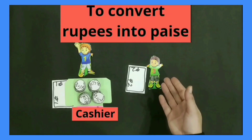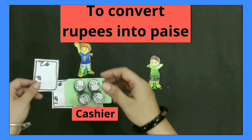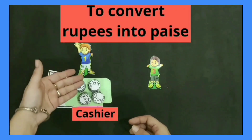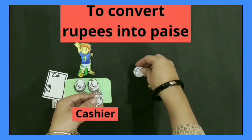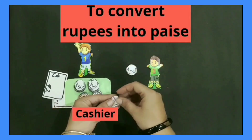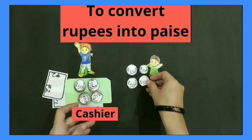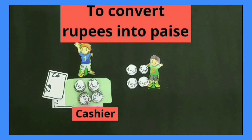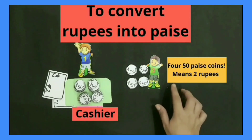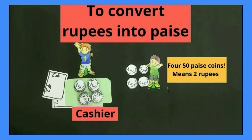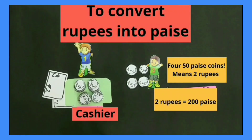Sandeep came to the cashier and told him to give 50 paise coins for 2 rupees. The cashier gave him 4 coins of 50 paise — 1, 2, 3, 4. It means 4 fifty-paise coins equals 2 rupees. So 2 rupees is equal to 200 paise.